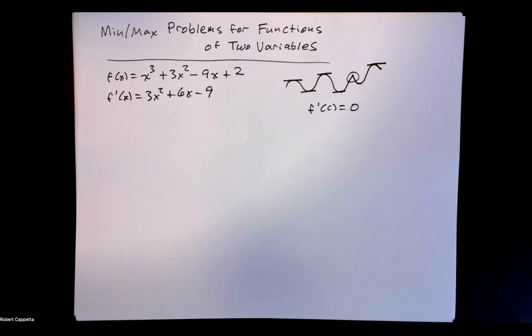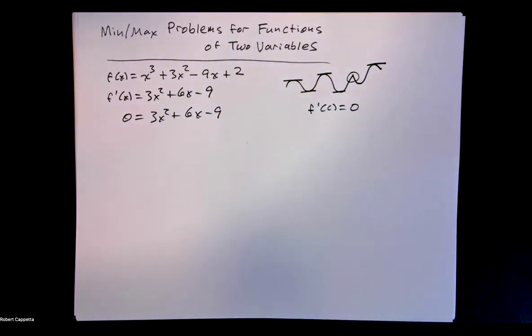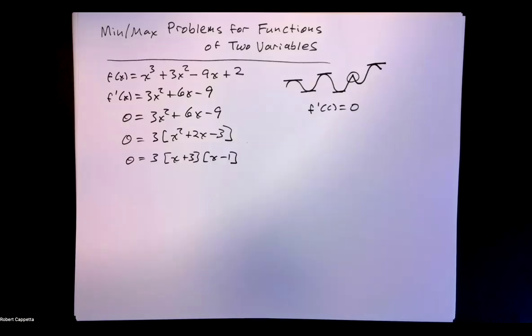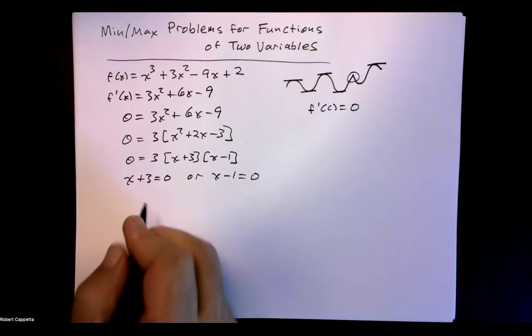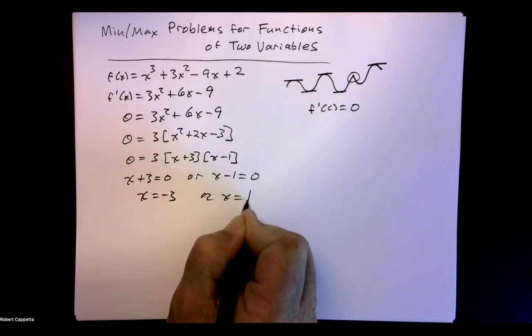The first derivative of that function is f prime of x equals 3x squared plus 6x minus 9. Set that equal to zero. Why do we set the first derivative equal to zero? Because that gives us points of horizontal tangency. Then we've got to solve this using algebraic strategies. Step one is to factor out the three, and then factor x squared plus 2x minus 3. A quadratic formula would also work. Then finish this by setting each of those factors equal to zero. Our critical values are x equals negative 3 or x equals 1.